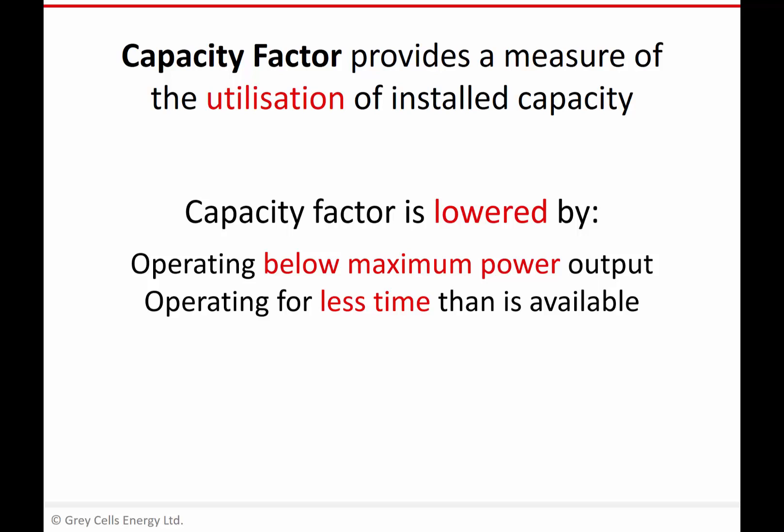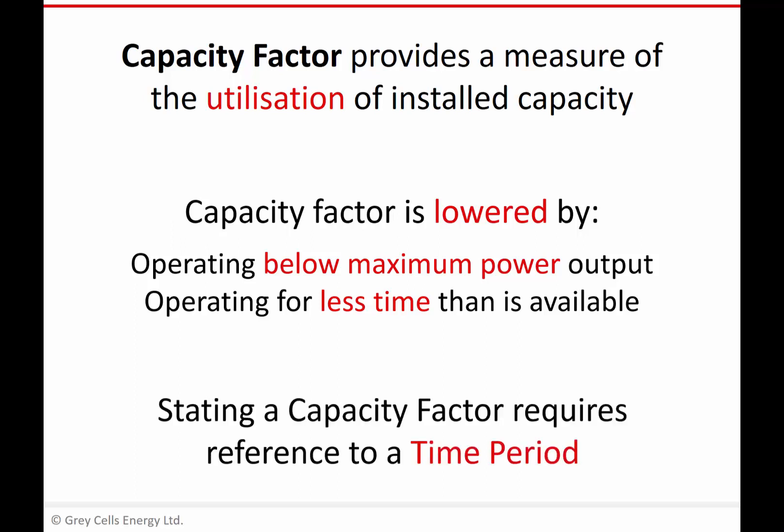Capacity factor can also be reduced if the plant operates for less time than is available — which is what the concept of full load hours captures, where full load hours are fewer than the total hours in the period. This might be because the plant is down for maintenance, has broken down, or in the case of a wind farm, there's simply no wind. In practice, capacity factor is lower than 100% due to a combination of both effects: operating below maximum power and having some downtime. You do need to reference the time period over which you're measuring or calculating capacity factor.